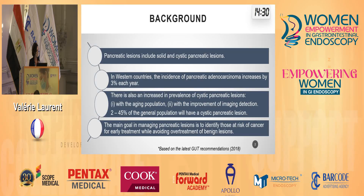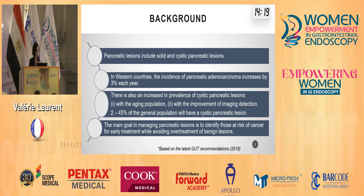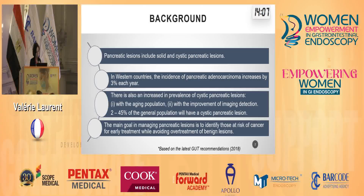Pancreatic lesions are solid and cystic lesions, and they are increasing. In Western countries, the incidence of adenocarcinoma increases by 3% each year, and we estimate between 2 to 45% of the general population will have a cystic pancreatic lesion during their lifetime. This is due to the improvement of imaging detection and the aging population. The main goal in managing pancreatic lesions is to identify those at risk of cancer for early treatment while avoiding overtreatment of benign lesions.